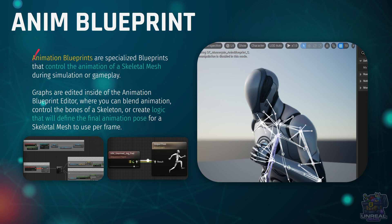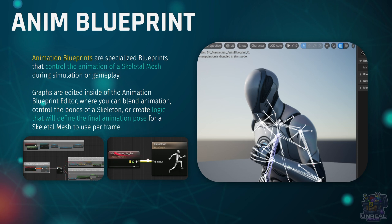Animation Blueprints are specialized blueprints that will control the final animation of a skeletal mesh. We have two types of graphs inside them. First, we have the Event Graph, which is where we read data from the character and store it in variables, and then we have the Anim Graph, which is where we use those variables and make a final decision on the output pose that the skeletal mesh is going to have.